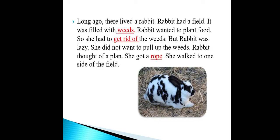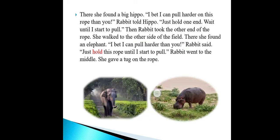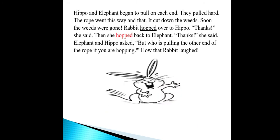In this paragraph you will read about a hippo and an elephant. In the next paragraph you will read about why the rabbit is laughing. When you read all these paragraphs and the passage, you will find questions at the end that you have to answer.